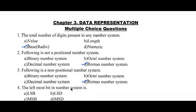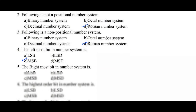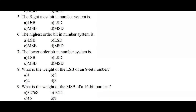Question number four: the leftmost bit in a number system is the highest bit order. Option C, most significant bit, is the right answer. Question number five: the rightmost bit in a number system is the least significant bit, so option A is the right answer. Question number six: the highest order bit in a number system is the most significant bit, so option C is the right answer.